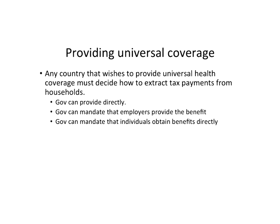Still on financing, a system wanting universal health coverage must decide how to extract tax payments and provide coverage. The government has options: it can extract payments and provide coverage directly; it can mandate that employers provide benefits — Germany and the US have elements of this; or it can mandate that individuals obtain benefits directly, where legislation requires individuals to have coverage through their employer, public coverage if eligible, or privately otherwise.